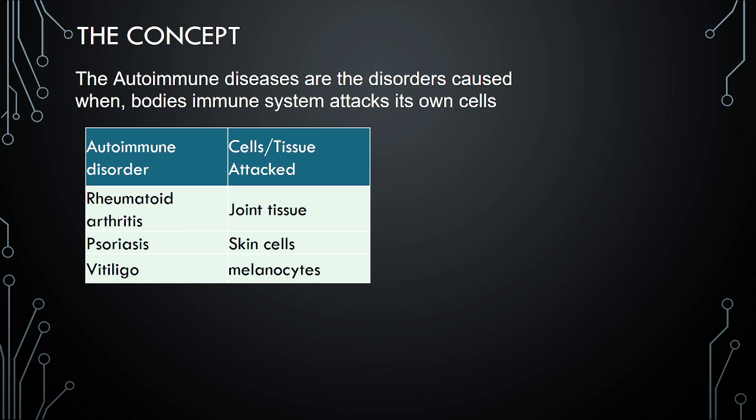Vitiligo, where we can see white patches on a person's face, those who are suffering from vitiligo. There are particular cells that synthesize melanin are getting attacked. It is called melanocytes. So these are typically the examples of autoimmune disorders, autoimmune diseases.